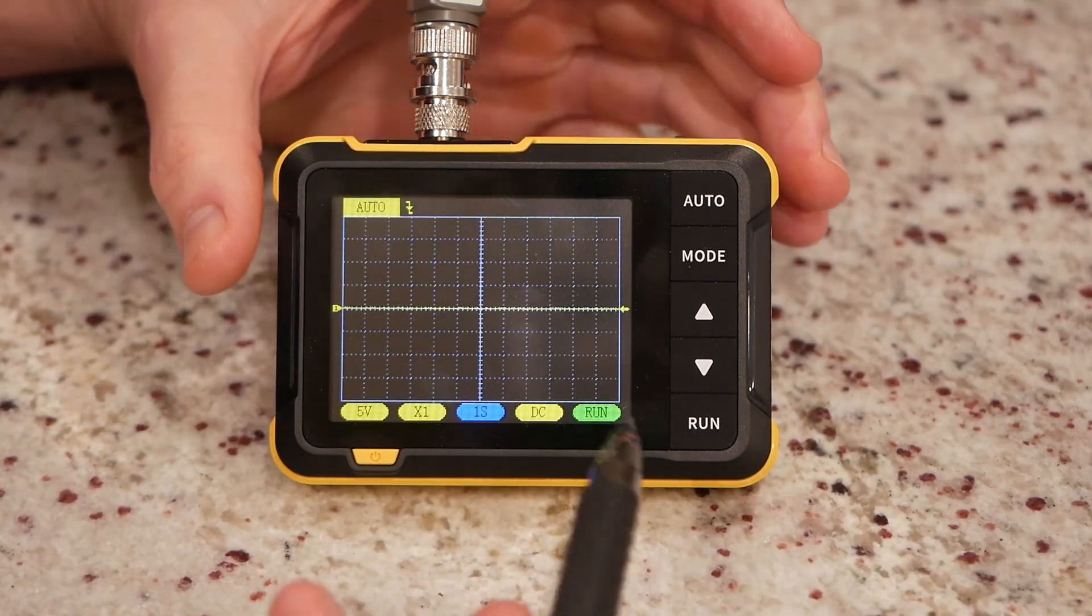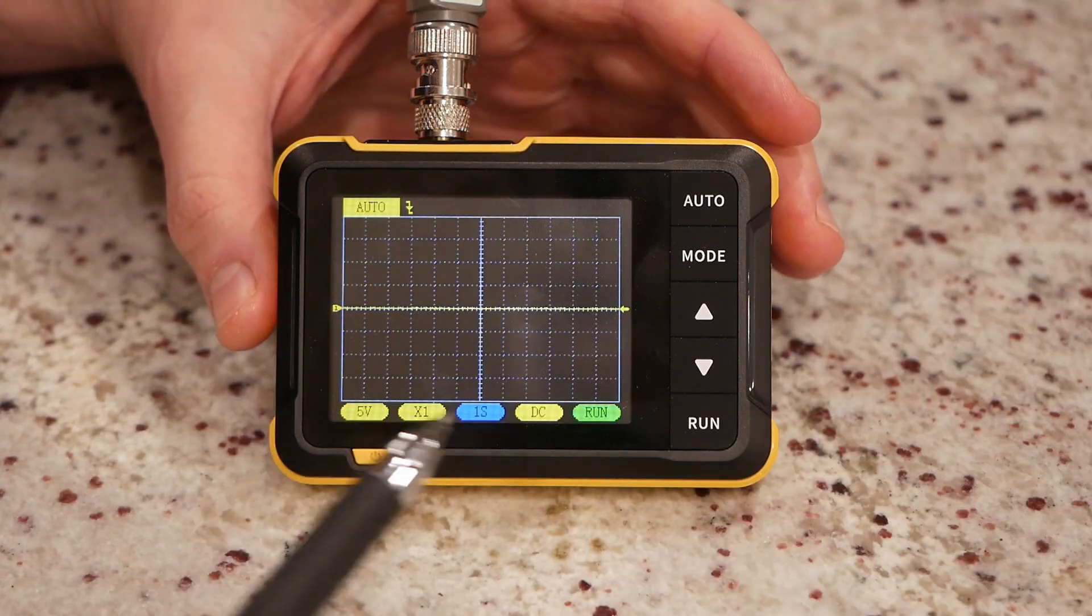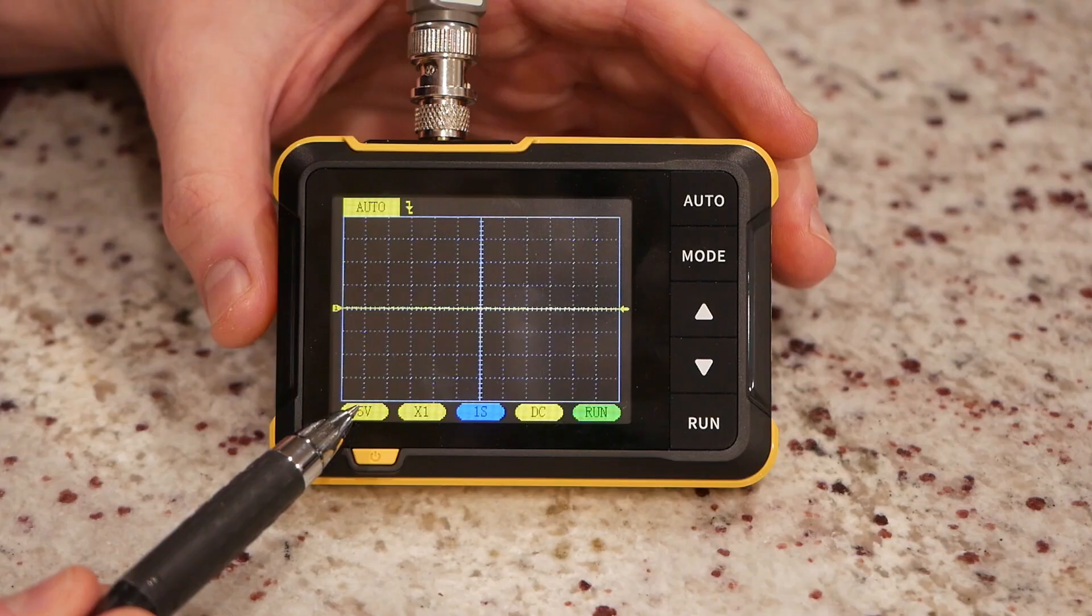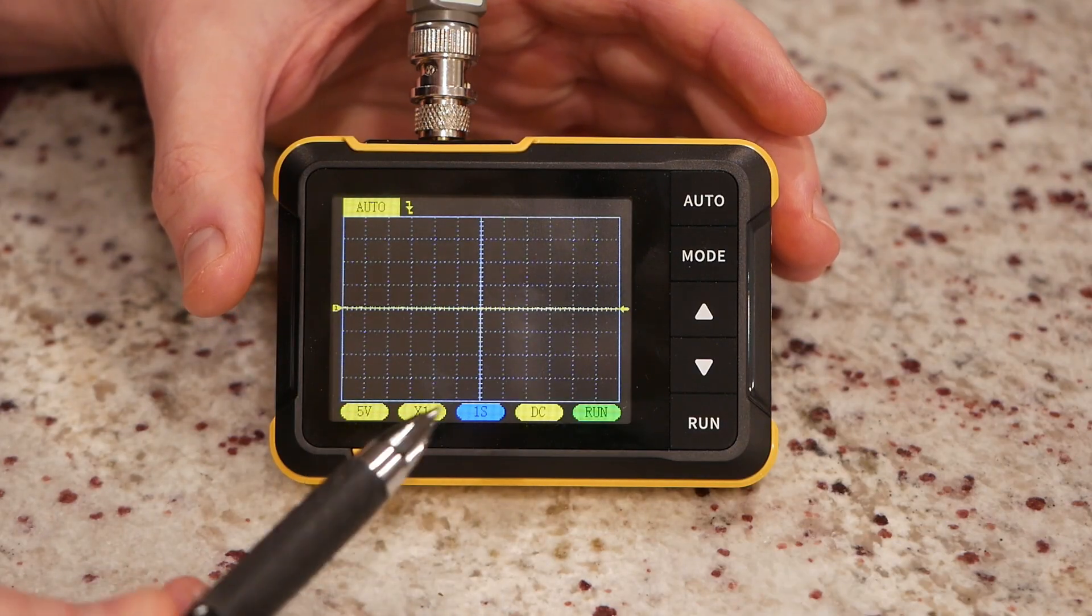So essentially, an oscilloscope just graphs voltage over time. That's really all there is to it. Down here, we have some options. Essentially, the options all they really do is let you change the view.